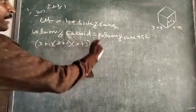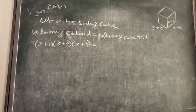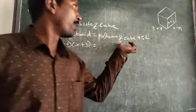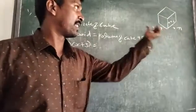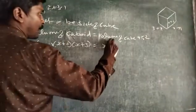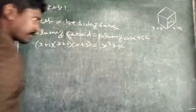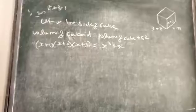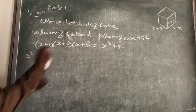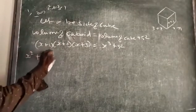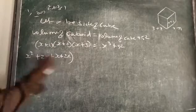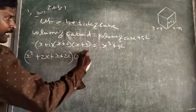You have to multiply (x+1) into (x+2) into (x+3). Now we take the x value. The volume of the cube equals x³ plus 52. Now multiply: x into x gives x², x into 2 gives 2x, 1 into x gives x, 1 into 2 gives 2 — making x² plus 3x plus 2.